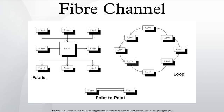Arbitrated Loop: In this design, all devices are in a loop or ring, similar to token ring networking. Adding or removing a device from the loop causes all activity on the loop to be interrupted. The failure of one device causes a break in the ring. Fiber Channel Hubs exist to connect multiple devices together and may bypass failed ports. A loop may also be made by cabling each port to the next in a ring. The minimal loop containing only two ports, while appearing to be similar to point-to-point, differs considerably in terms of the protocol. Only one pair of ports can communicate concurrently on a loop. Maximum speed of 8 GFC.